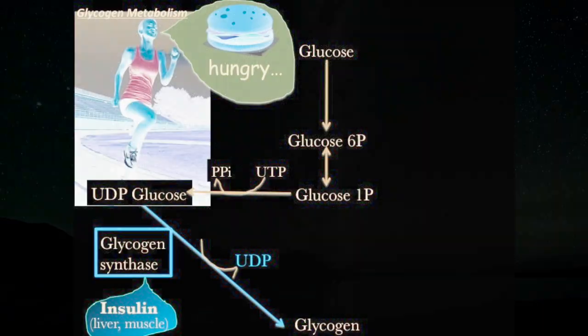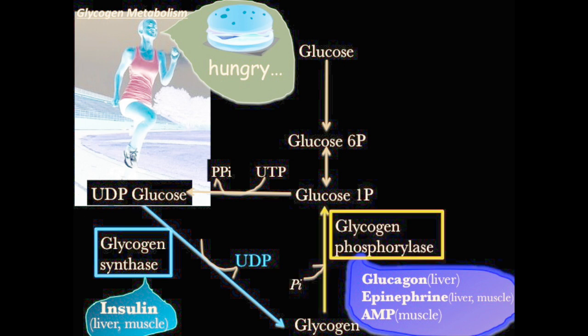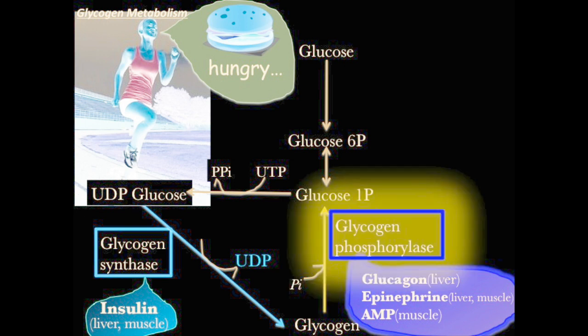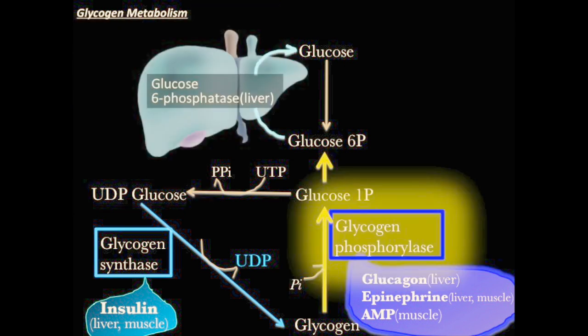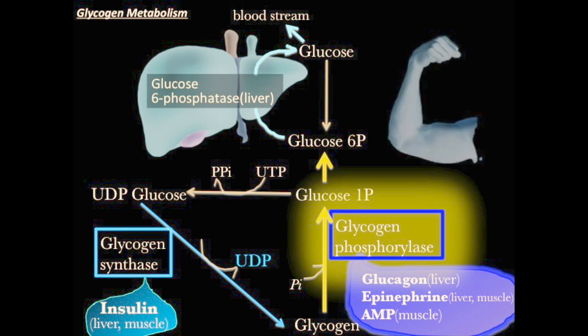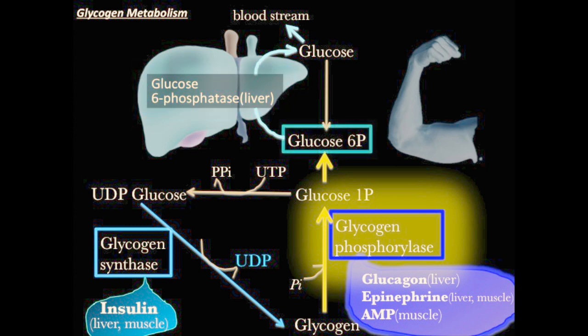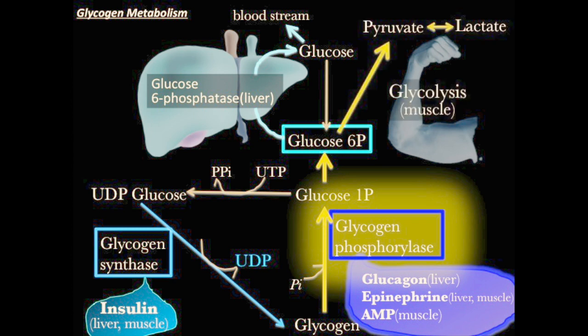When it is needed for energy, glycogen is broken down and glucose is converted in the liver. A mechanism like glucose-6-phosphatase, which is required to pass glucose into the blood, means the stored glycogen in skeletal muscles is available for internal use only and is not shared with other cells.